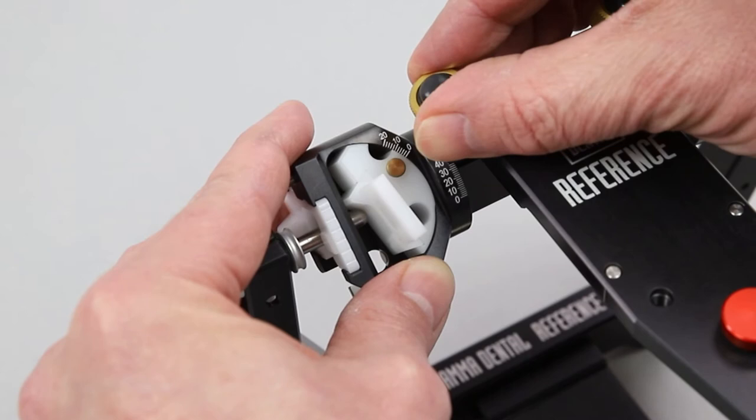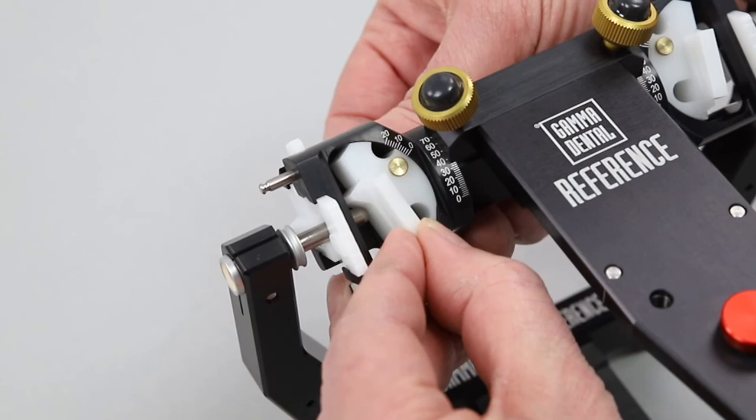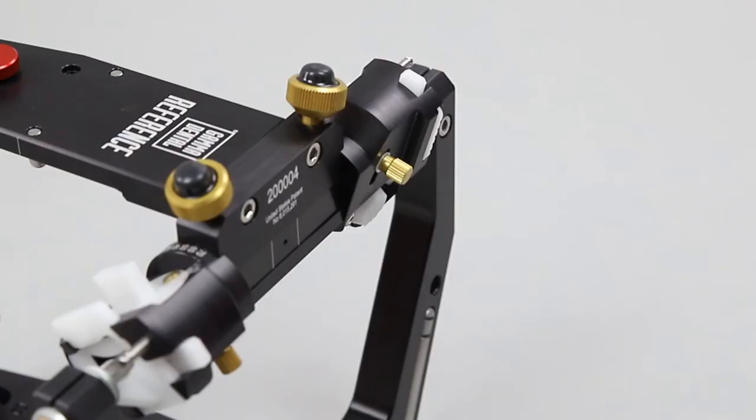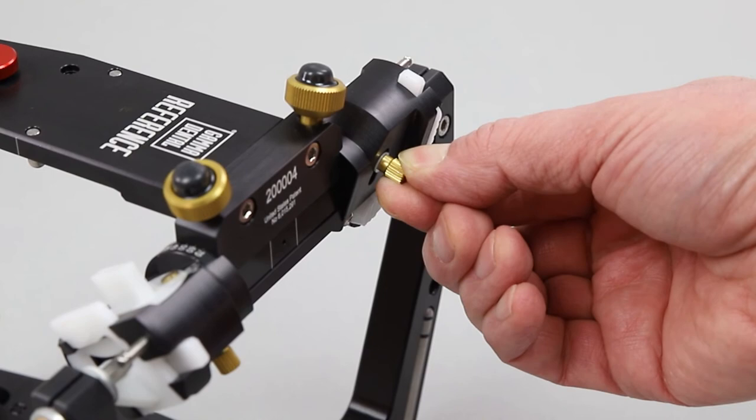The transversal or Bennett elements can be adjusted from 0 to 20 degrees. The fixation screw on the bottom of the condylar housing must be opened and closed properly again.